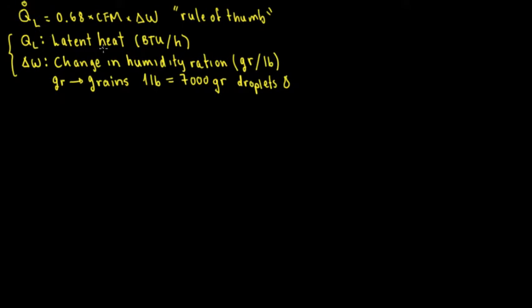So QL is latent heat — that's the rule of thumb. What we're trying to do in this video is explain where this formula comes from, so that we understand better how everything works. We're going to underline this in pink just so we can see that this is the rule of thumb.